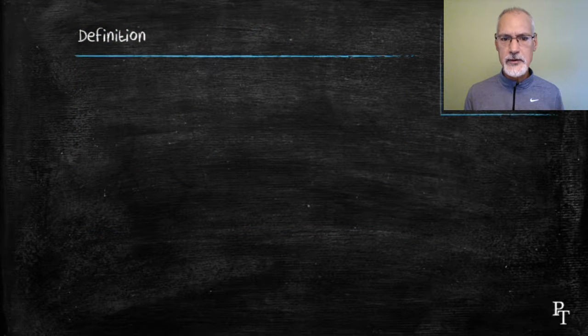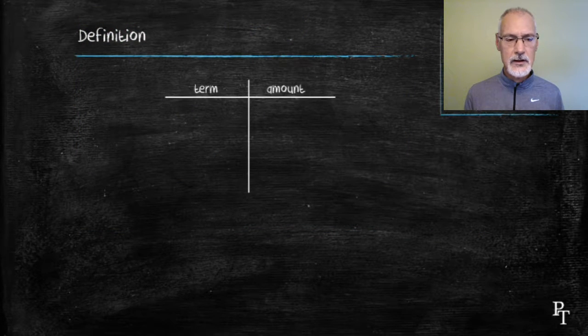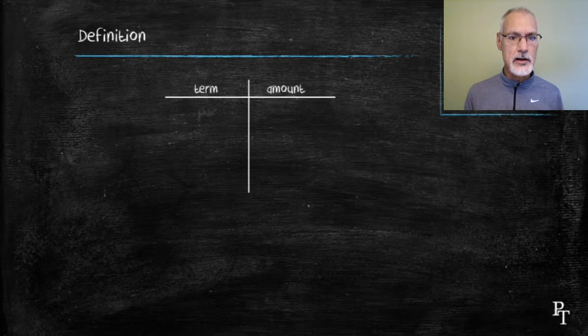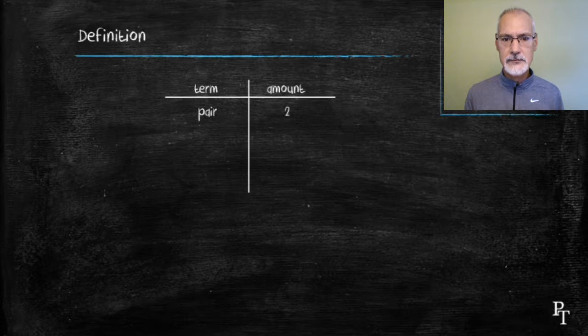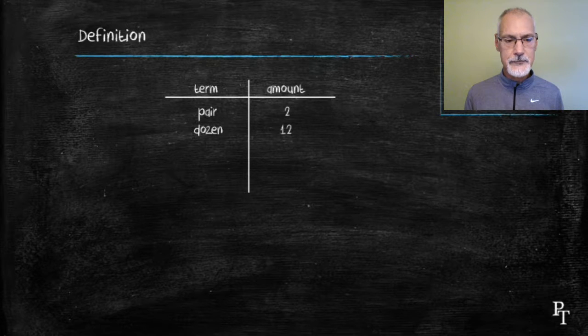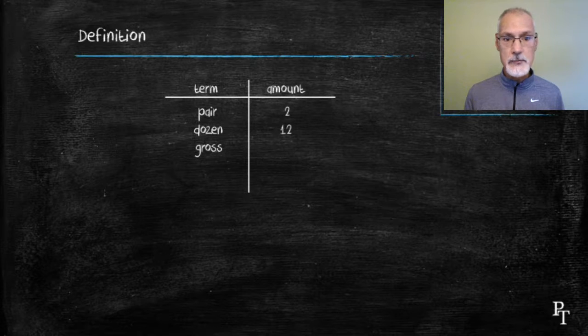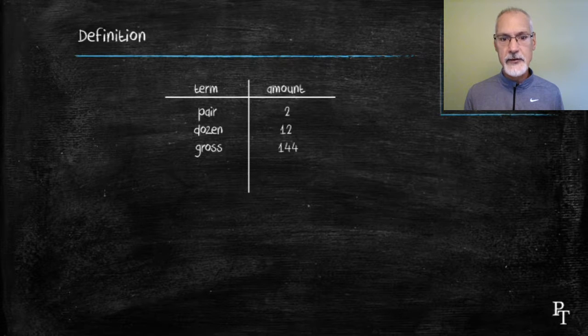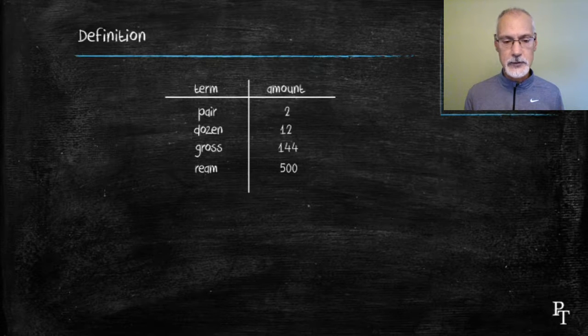I want to start off with some terms that you're somewhat familiar with. For instance, when you hear the term a pair, two comes to mind. A dozen, the number 12 comes to mind. Here are a few lesser known ones. A gross represents 144, a gross of pencils. And a ream, when you buy a stack of papers, you typically buy a ream of paper, or 500.